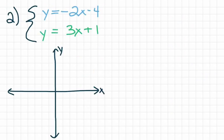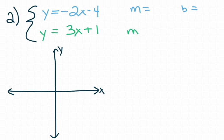Let's look at one more example. For the second example we have the system: y equals negative 2x minus 4, and y equals 3x plus 1. We know it's a system of equations because of the brace, and we have two equations telling us to graph both. For the blue equation, identify slope and y-intercept. For the green equation, do the same. Go ahead and pause the video, write them in, then we'll come back to discuss.